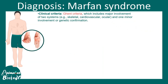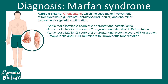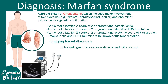The clinical criteria involves looking at distinct visible features. There is something known as the Ghent criteria, which includes major involvement of at least two systems — either skeletal, cardiovascular, or ocular — along with genetic confirmation. An example could be aortic root dilation with a Z-score of two or greater, combined with ectopia lentis. Any combination of two such findings can lead to a diagnosis according to the Ghent criteria.